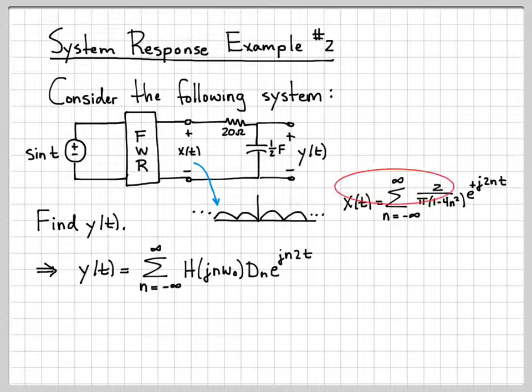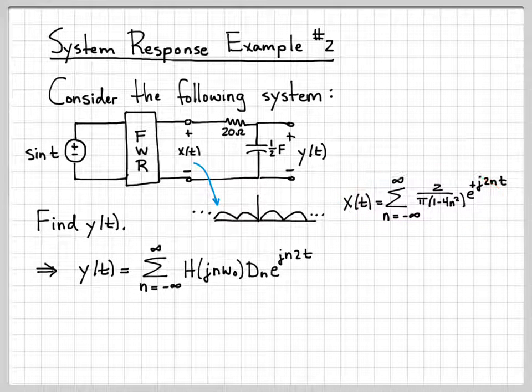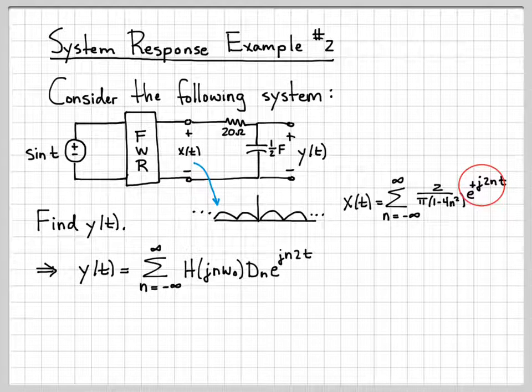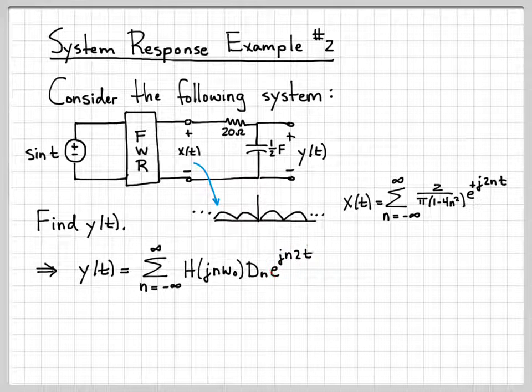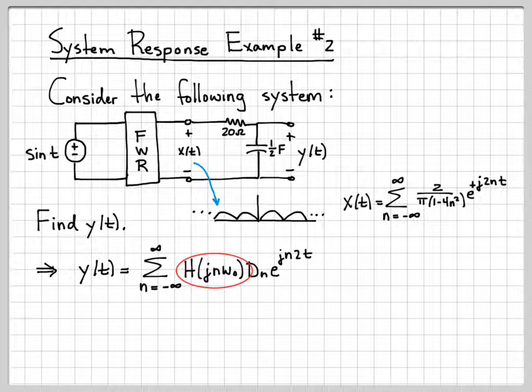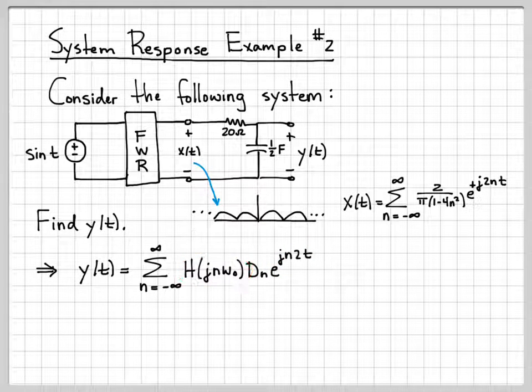Alright. So back to what we were talking about. Now, this representation is very nice because it's written as weighted signals of the form e^(st). If we put e^(st) into a system, e^(st) is exactly what comes out, except it gets multiplied by a complex number. In this case, the complex number is H(jn·ω₀).